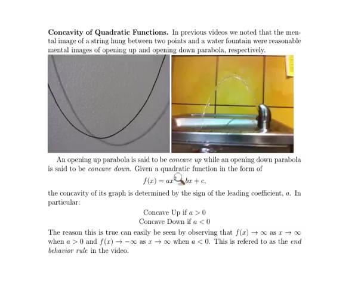If a is negative and this value is very large, then the answer would have to be negative. So as x gets larger, this would have to be going down.